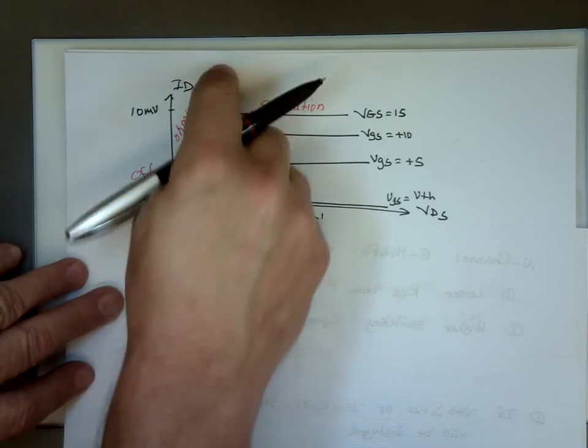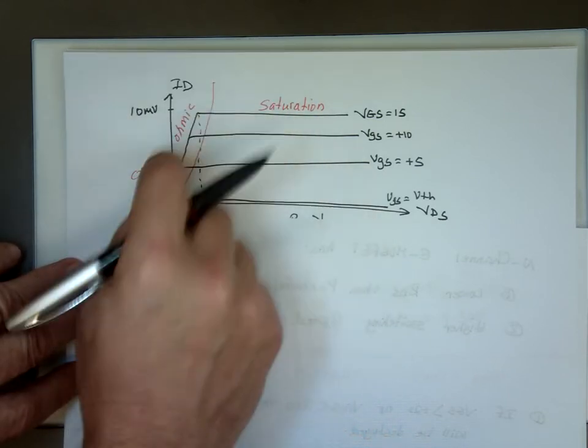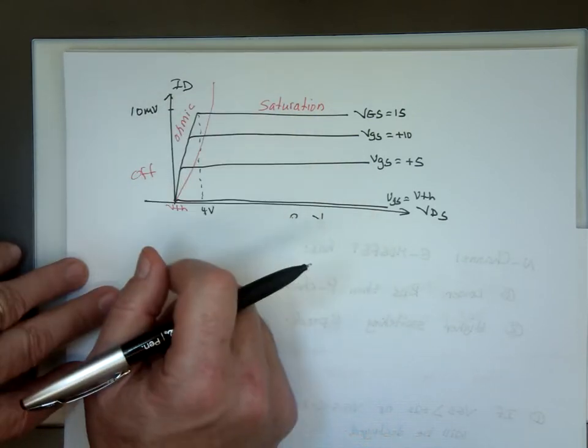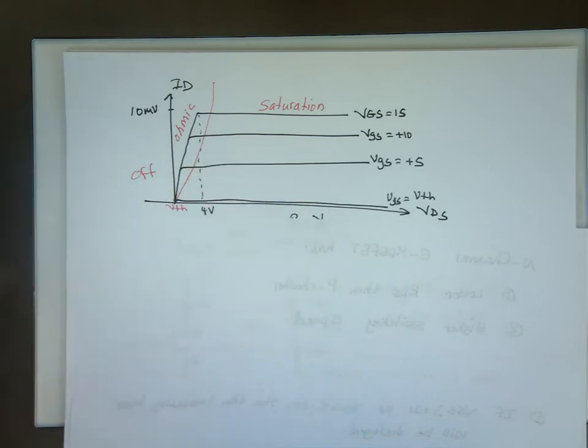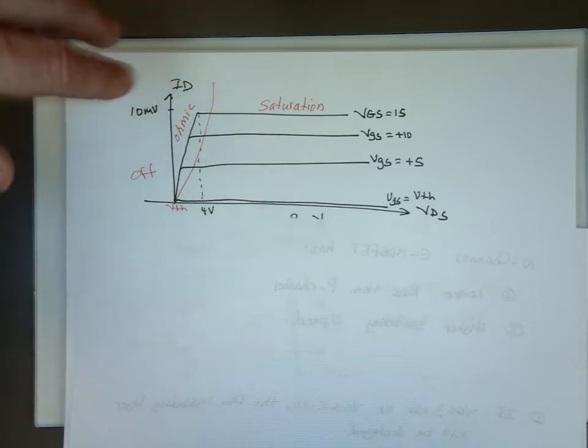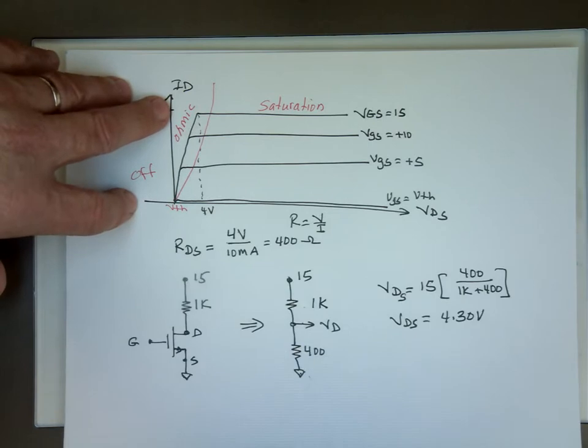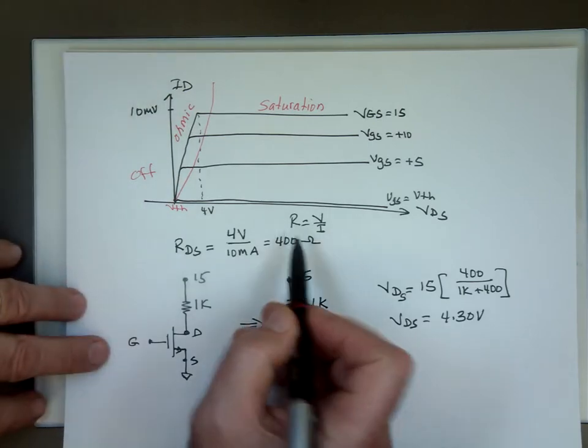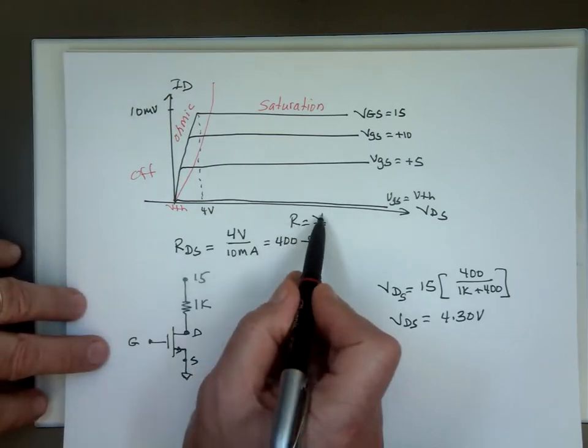So in the ohmic position like this, you're in like a linear circuit, and your MOSFET will behave just like a resistor. And what's the value of that resistor? Well, the value of that resistor is going to equal to the slope of that. As I said, I did the whole thing not knowing the camera's off.